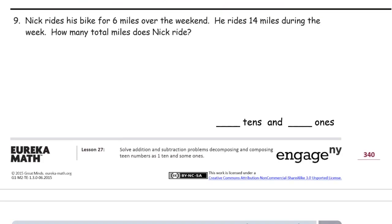Nick rides his bike for 6 miles over the weekend. He rides 14 miles during the week. How many total miles does Nick ride? So 6 miles over the weekend, W, I'll use W for weekend. That's 1, 2, 3, 4, 5, 6. And then we have 14 miles during the week. So I'll just call that D for during. Weekends are Saturdays and Sundays. And then the rest of the days of the week. Monday, Tuesday, Wednesday, Thursday, and Friday. Those are weekdays. So weekend, that's Saturday and Sunday. And these are other days during the week. That's 14 of these. 1, 2, 3, 4, 5, 6, 7, 8, 9, 10, 11, 12, 13, 14.